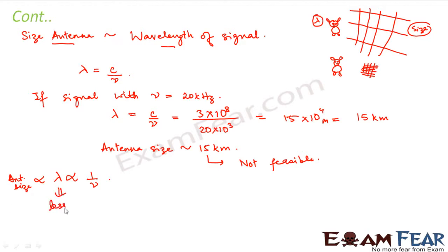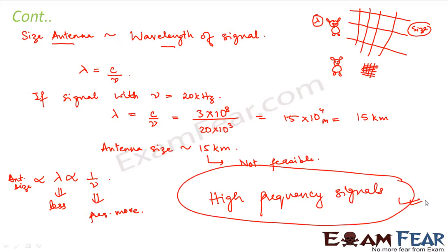For signal transmission to happen successfully, the antenna size should be within possible limits. The antenna size will be within possible limits only when the value of lambda is less. For lambda to be less, the value of frequency should be more — that means frequency should be high. So our conclusion is that we want high frequency signals, because high frequency signals have lesser wavelength, and lesser wavelength means the size of the antenna will be smaller. So the first factor which affects the transmission of signals says that high frequency signals are desirable. We get one vote in favor of modulation, because modulation increases the frequency of the message signal by combining it with a high frequency carrier wave.